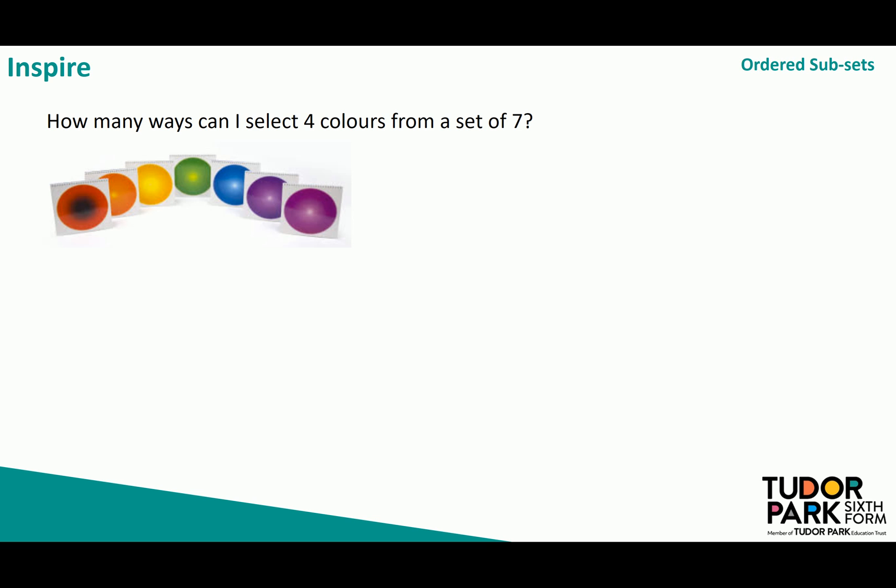Now here I'm still thinking that order matters. That means that if I'm picking the colours yellow then green then blue then violet that is different from yellow then green then violet then blue. To do this well I've got seven different choices for my first colour, six different choices for my second, five different choices for my third and four different choices for my fourth.